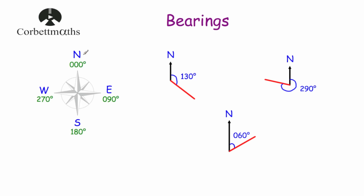So if we were travelling north, our bearing would be 000 degrees. If we were travelling east, it would be 090 degrees. If we were travelling south, it would be 180 degrees. And if we were travelling west, it would be 270 degrees.